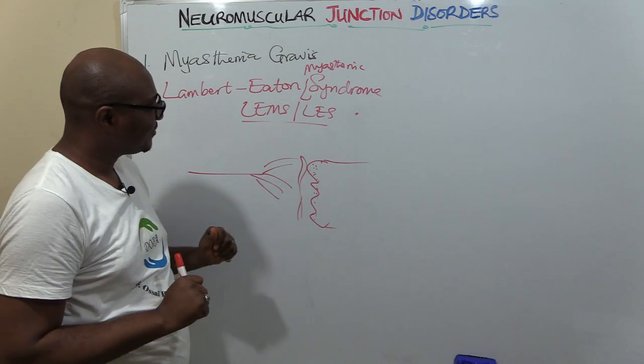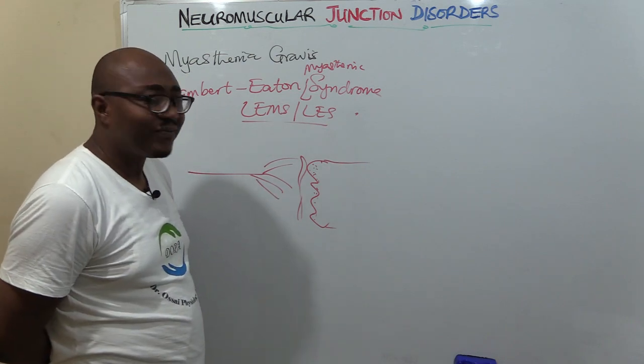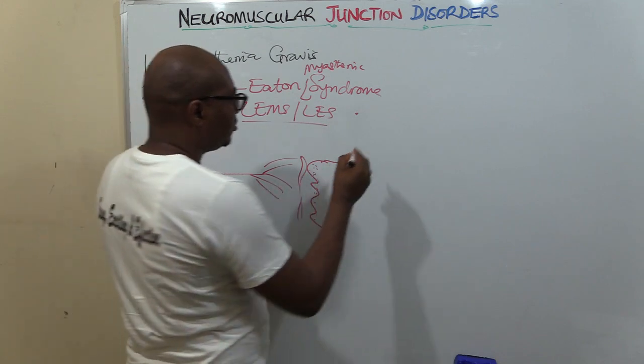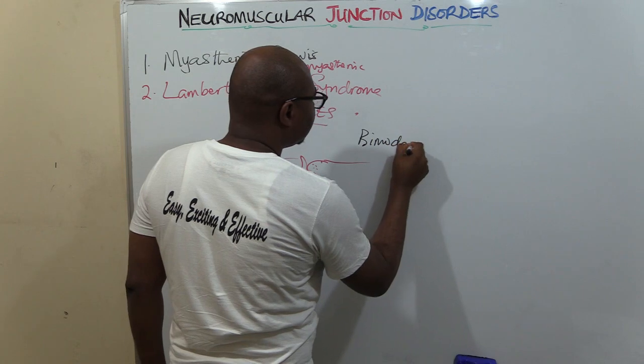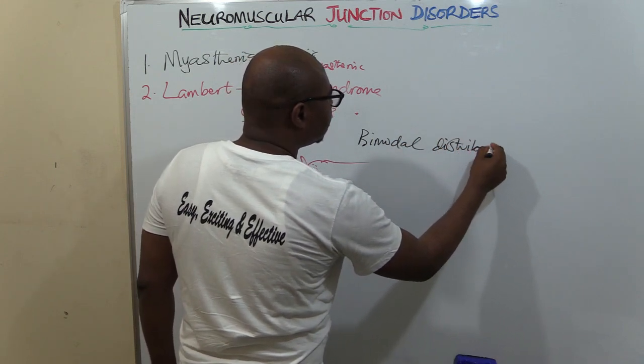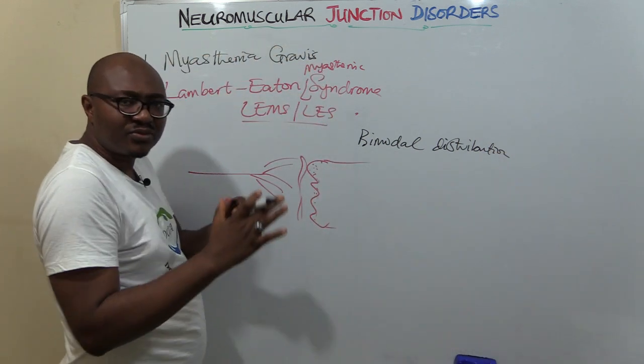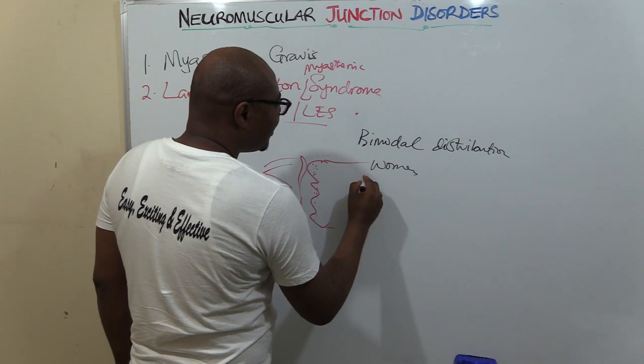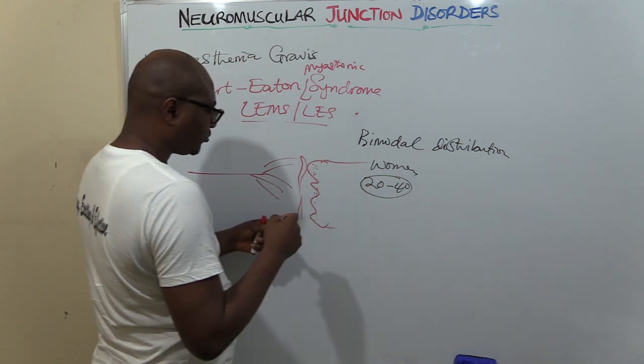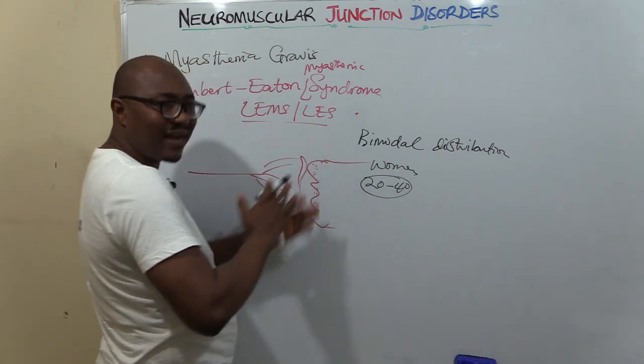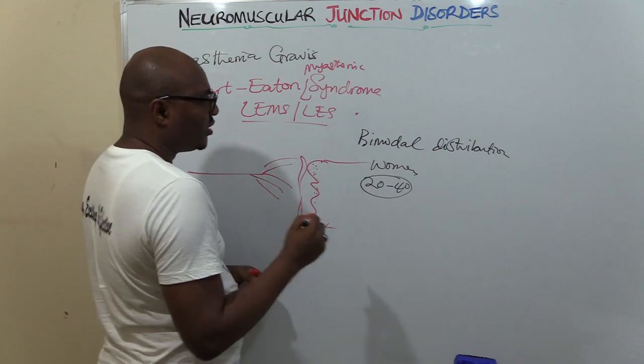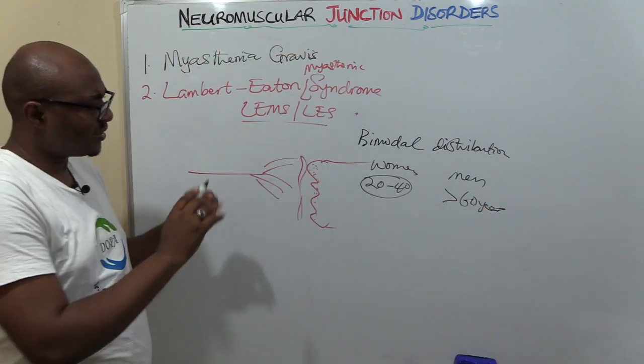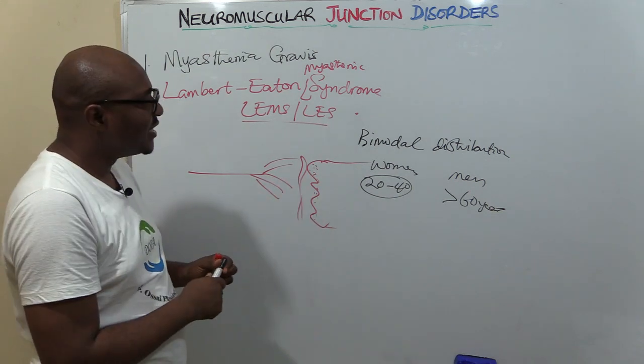This Myasthenia Gravis has what we call a bimodal distribution of the disease between men and women. For women, it's between age 20 to 40—some will say 20 to 30, but under 40. For men, it's men above 60 years. You can see the pattern, though we don't know why it does that.